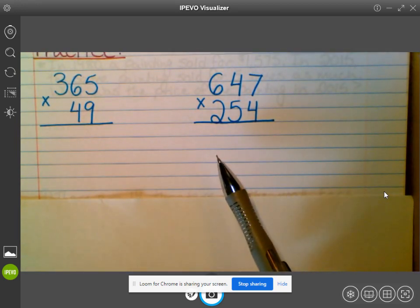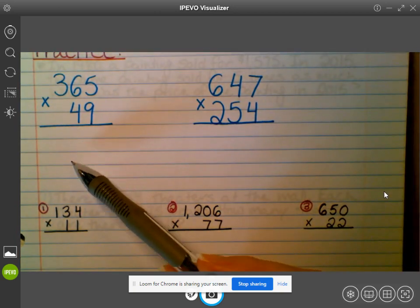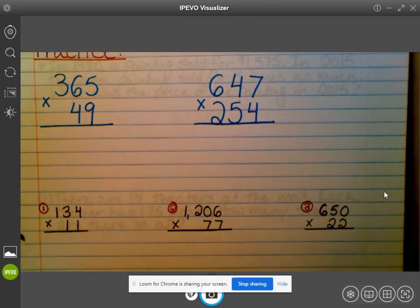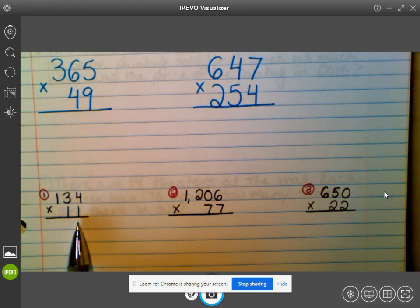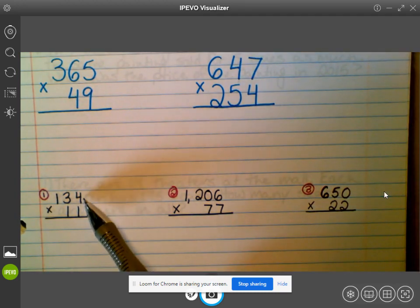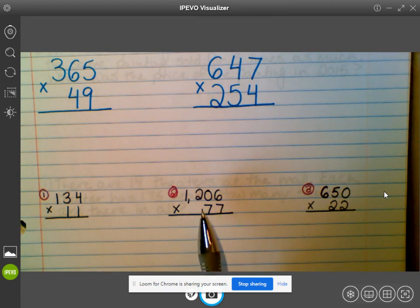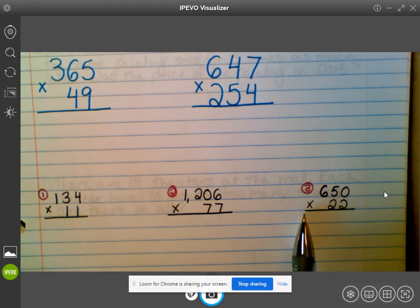So these are two that we'll do together. And then we have three that you will be doing on your own. So I skipped one, two, three, four, five, six lines. Number one is 134 times 11. I put the number with the most digits on top like we're supposed to, and I lined up 11 underneath. Number two is 1,206 times 77. Number three is 650 times 22.